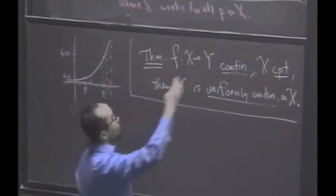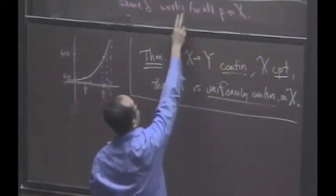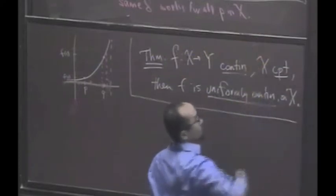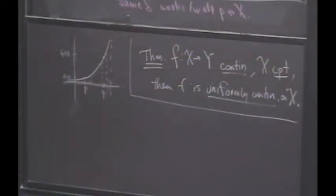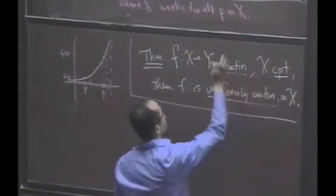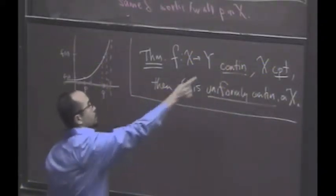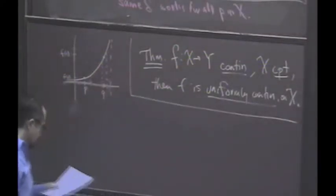It just means that, look, for any target distance you name, I can tell you how close you have to be to land within epsilon. It doesn't matter where I'm at. And this theorem is saying, guess what?